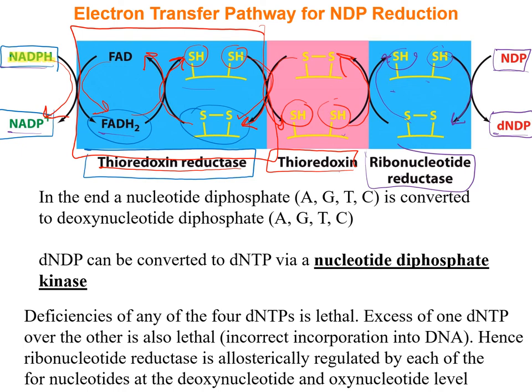The overall goal is to keep the ribonucleotide reductase catalytic cycle in motion — not after one or two reactions, but continuously. NADPH donates electrons to thioredoxin reductase, which donates to thioredoxin, which donates to ribonucleotide reductase, which converts nucleotide diphosphates to deoxynucleotide diphosphates.